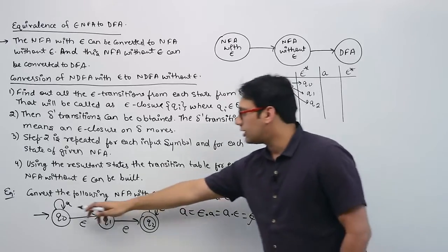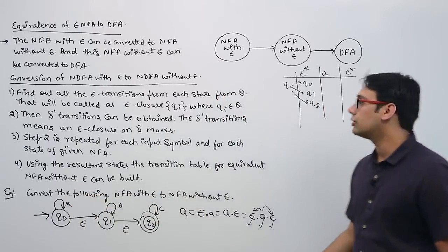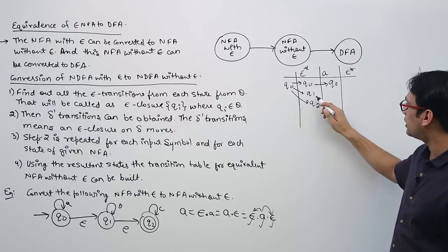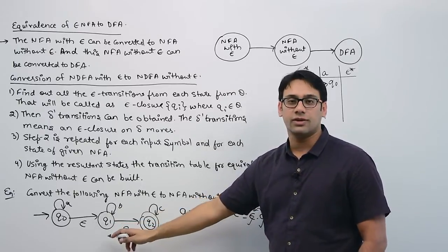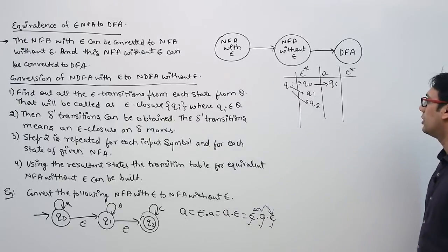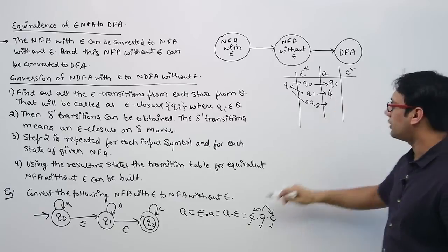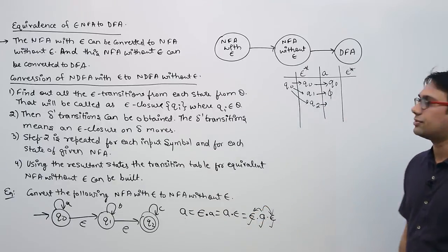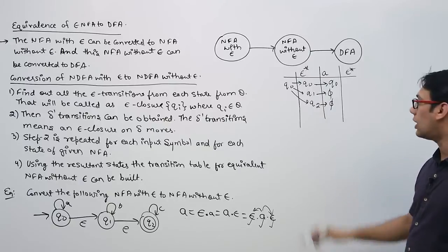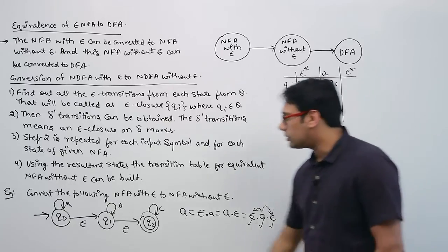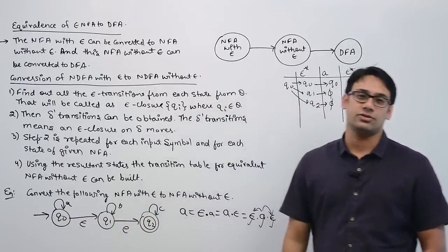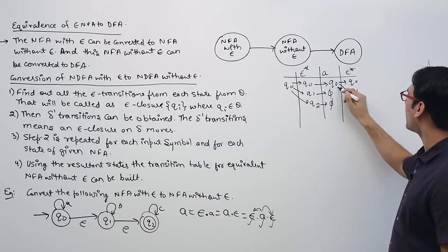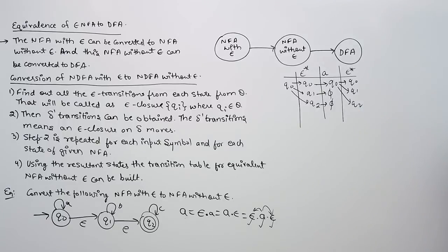Now, if we are at Q0 and see symbol A, we go back to Q0. From Q1 on symbol A, there is no transition — that gives Phi. From Q2 on symbol A, there is also no transition — Phi. So the only reachable state is Q0, and its Epsilon closure gives {Q0, Q1, Q2}. Therefore, on symbol A from Q0, we transition to {Q0, Q1, Q2}.